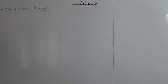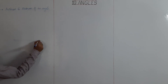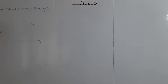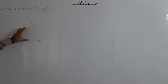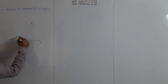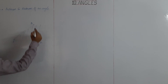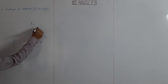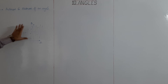Next topic: interior and exterior of an angle. Say angle AOB is the angle. Interior means all points or the region lying inside this angle. Any point which lies inside this region is called an interior point. This region is called the interior of the angle.